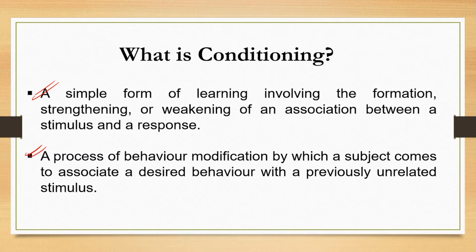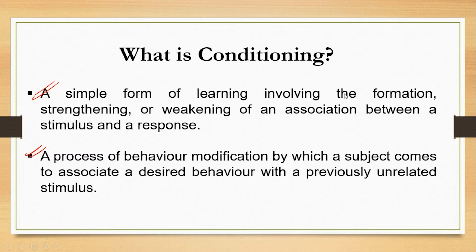I'll leave the explanation of conditioning here and move on to an example, because that example will make conditioning much clearer. This example is actually an experiment performed by Pavlov that ultimately became an important part of his conditioning theory of learning. After looking at the example, you will be clear about what conditioning is. As of now, keep in mind: conditioning is the creation of a relationship between a stimulus and a response.